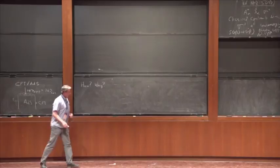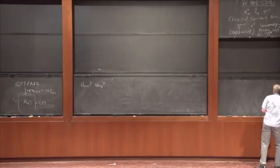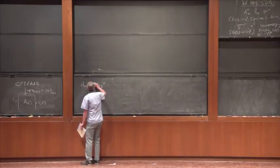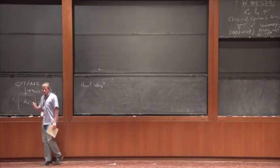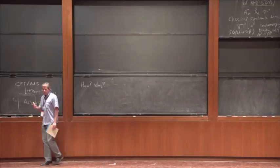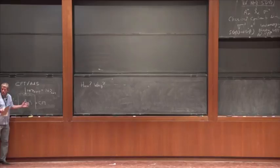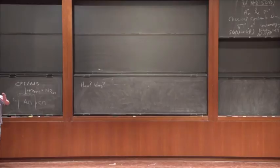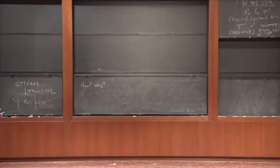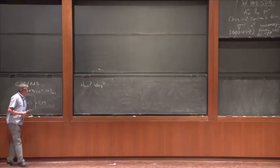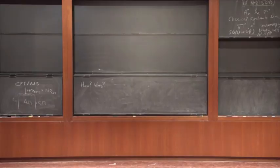Those are the questions you should ask yourself. According to the ADS-CFT dictionary, we haven't been able to make too much progress because most prescriptions say: take a correlation function of the CFT and it corresponds to doing some kind of bulk path integral, or you have a classical solution in the bulk with certain boundary conditions. The bulk is always treated somewhat as a black box, and it's hard to probe things in the middle of ADS. ADS-CFT seems a correct duality.